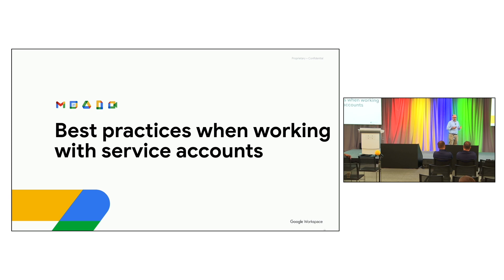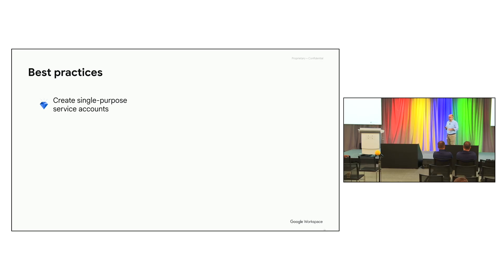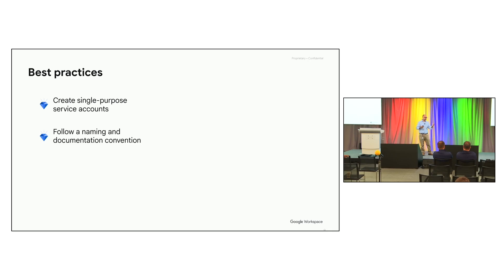Now let's look at best practices when using service accounts. Number one: create a single-purpose service account. You might be tempted to create one service account for your entire application with access to different roles and APIs, but the best practice is to create a single-purpose one. If you're creating a domain-wide delegation integration with Drive, create one service account for that; for a different use case within your application, create a different service account. Use a specific naming and documentation convention — the email addresses can be really lengthy, and a good naming convention describing what a service account does, what project it belongs to, and which application helps make auditing and monitoring easier.